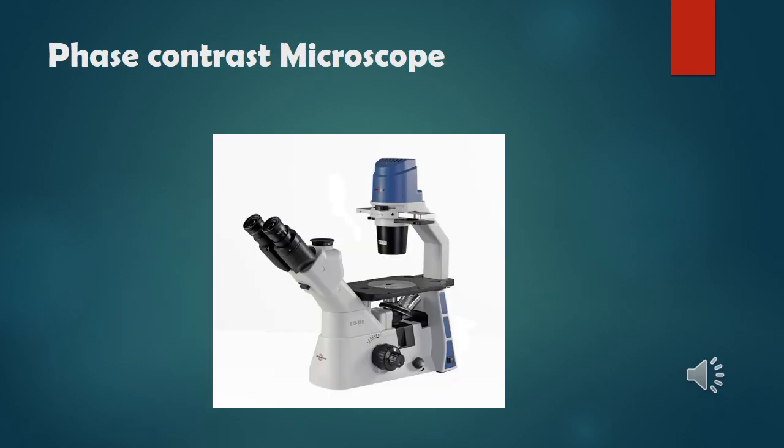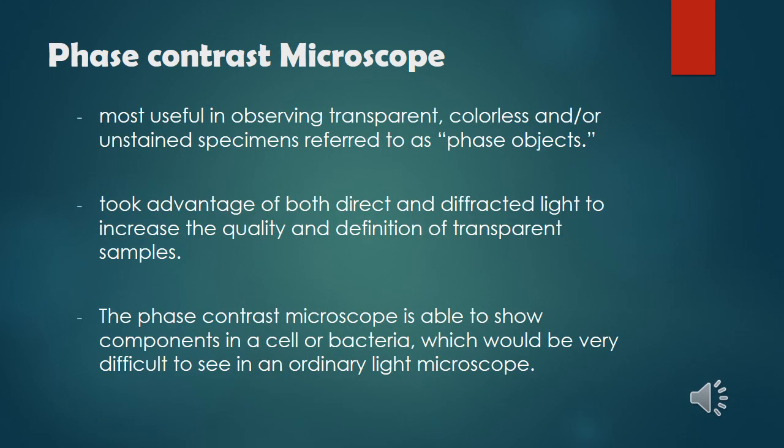This is the Phase Contrast Microscope. A Phase Contrast Microscope is most useful in observing transparent, colorless, and/or unstained specimens referred to as phase objects. It takes advantage of both direct and diffracted light to increase the quality and definition of transparent samples. The Phase Contrast Microscope is able to show components in a cell or bacteria which would be very difficult to see in an ordinary light microscope.